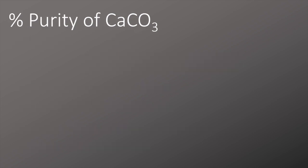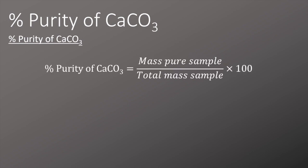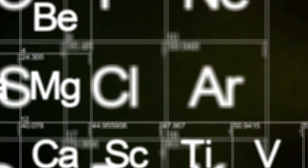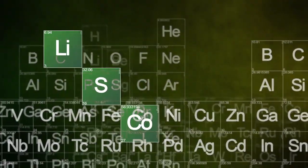In the final step we calculate the percentage purity using the equation: percentage purity = (pure mass ÷ total mass) × 100. Plugging in the numbers, the percentage purity of this sample is 64%. I hope you found that video useful and you can now understand how to calculate titrations and back titrations.